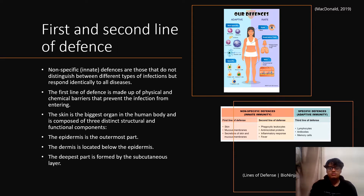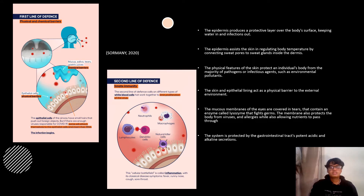The first line of defense is made up of physical and chemical barriers that prevent the infection from entering. The skin is composed of numerous layers to protect the body, control temperature, and serve as a sense organ. The skin is composed of the epidermis and the dermis. The epidermis produces a protective layer over the body's surface, keeping infections out.